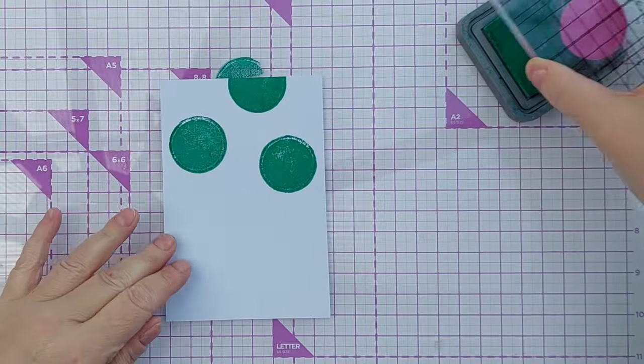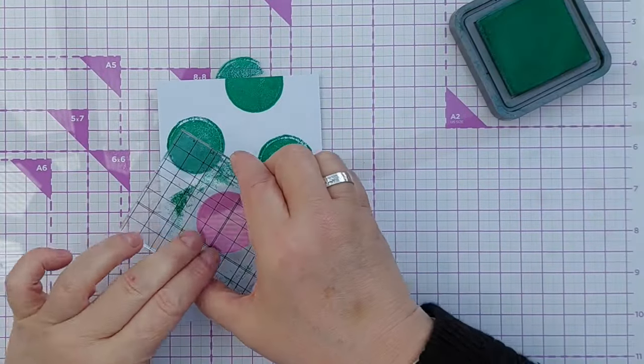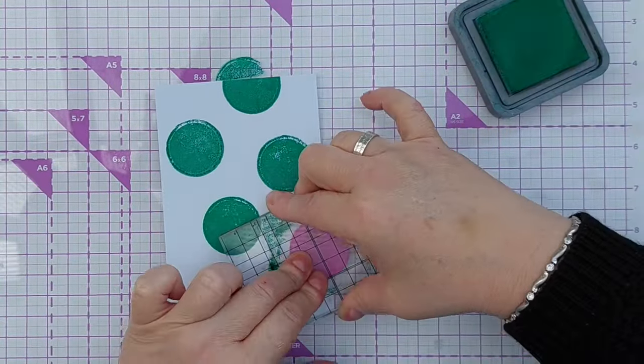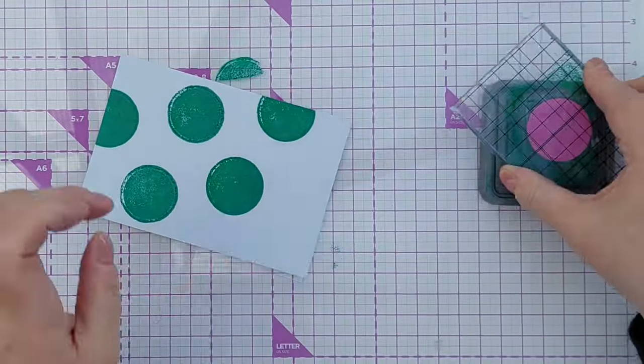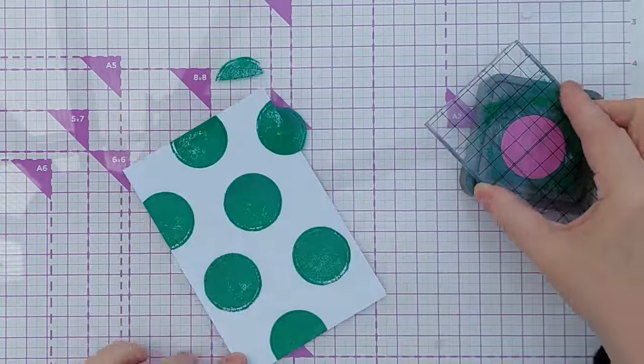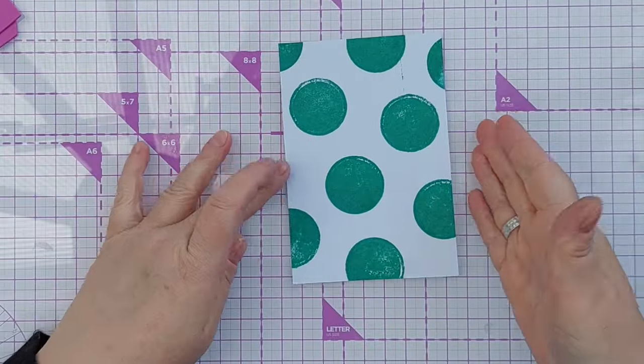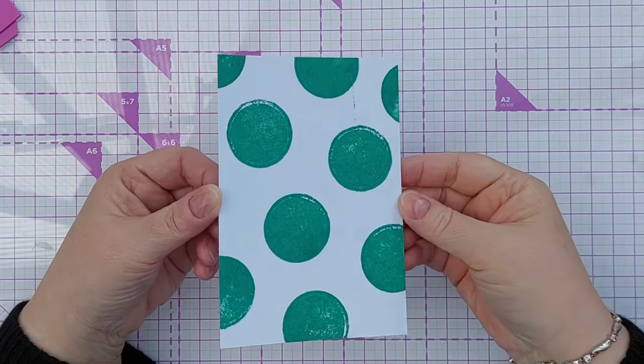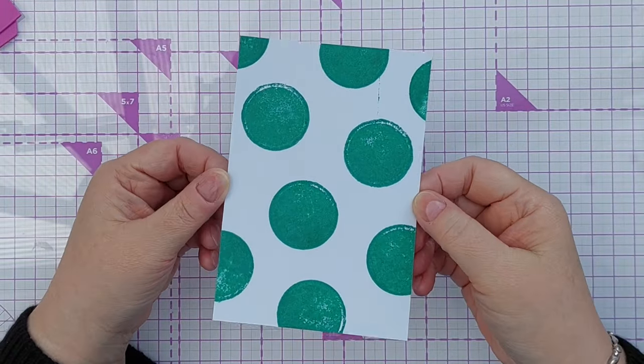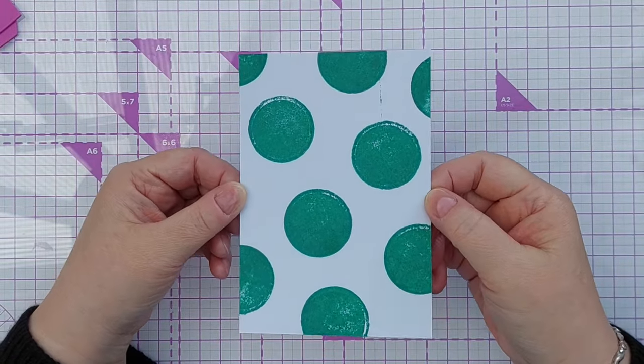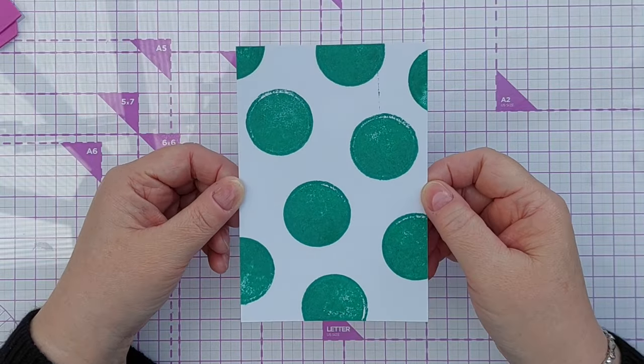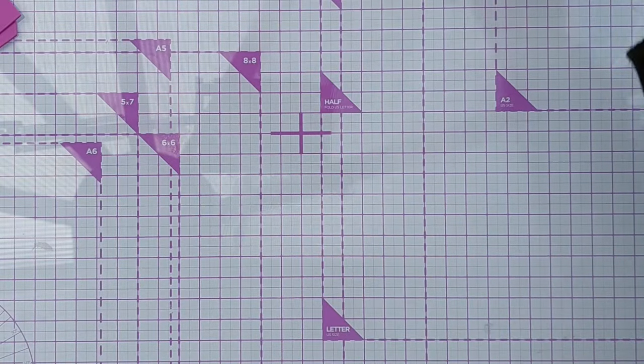You can make a whole piece of pattern paper this way. So there we have a piece of pattern paper with some big slightly irregular circles with a slightly distressed look, and I really like that. I'm going to keep that for later use.